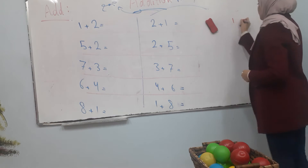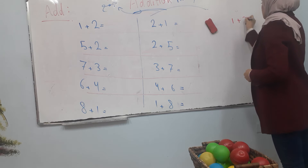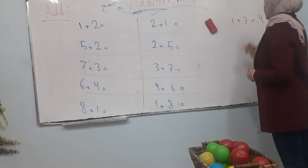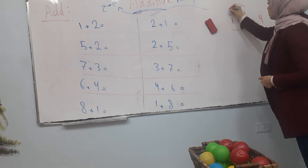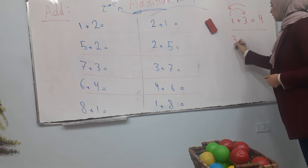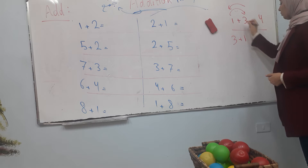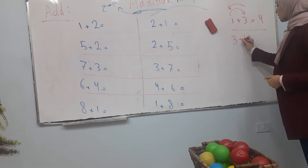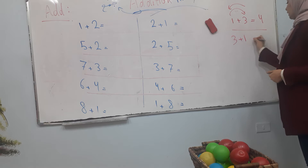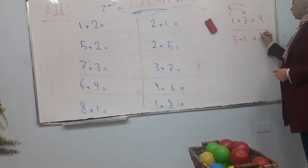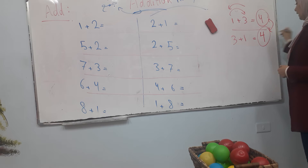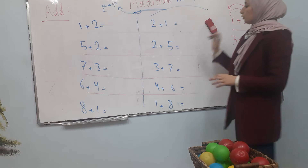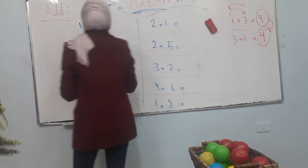For example: one plus three equals four. If I replace the numbers — three plus one — the result is the same. إذا بدّلت الأرقام، الناتج بيضل نفسه. Three plus one still equals four. إذن result هي نفسها.